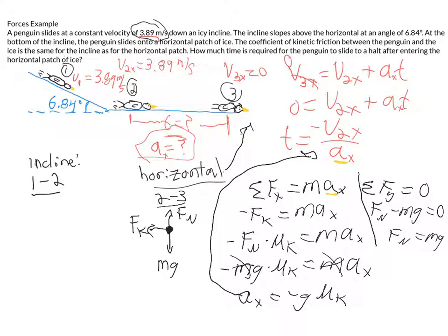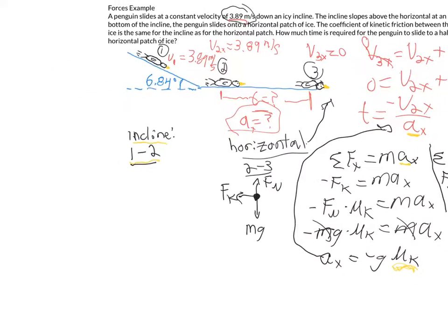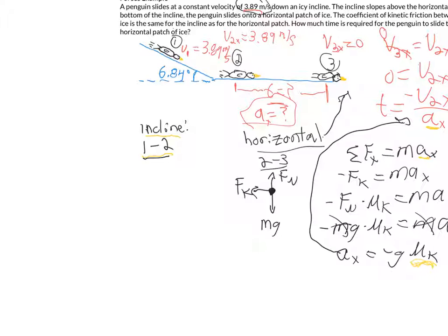We can't plug into the time equation quite yet because we still don't know the coefficient of friction. We need to figure out μk first. The part of the given information we haven't used yet is the incline. So let's evaluate what's going on on the incline to find the coefficient. Shifting focus to the incline: for a free body diagram we have weight mg straight down, normal force perpendicular to the ramp, and friction up the ramp.